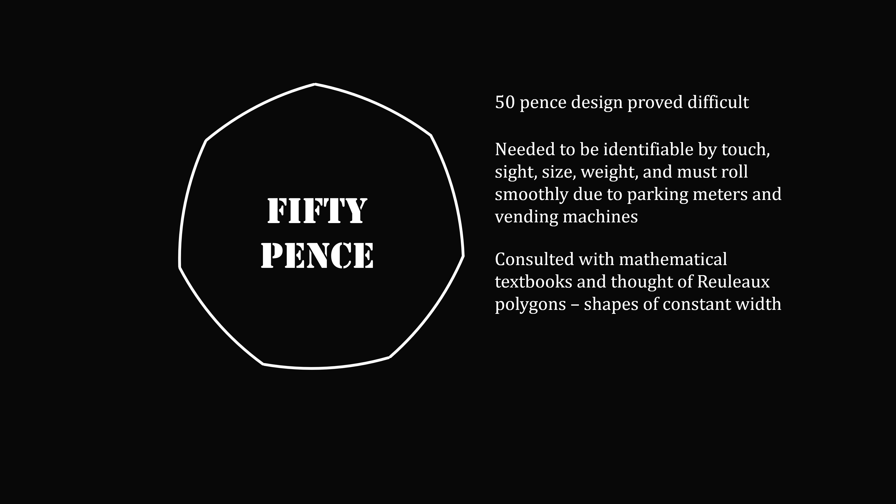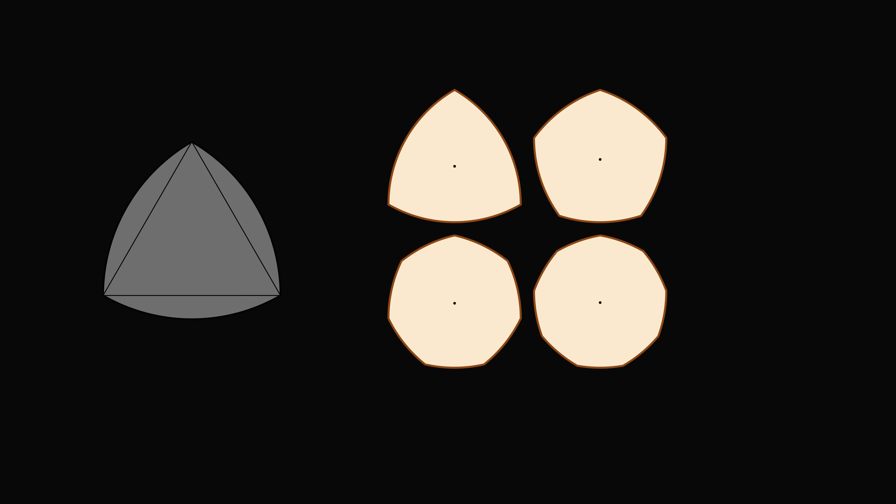So how did they figure it out? Eventually, they consulted with mathematical textbooks and thought of Reuleaux polygons, which are shapes of constant width. Here are a few Reuleaux polygons. The most famous is the Reuleaux triangle. What's interesting about all of these shapes is that they're formed by taking a polygon and then having circular arcs centered at each vertex of the polygon. This gives the interesting property that as you roll any of these shapes, it will be a constant width. You're not going to change the height as this coin is rolling.